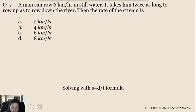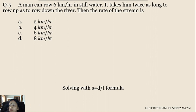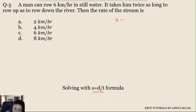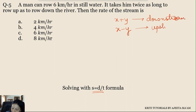The fifth question is again based on the first unit — numerical application. The first, second, and fifth questions are from this unit, while the third and fourth were from inferential statistics. This fifth question is based on boats and streams, solved using the formula: speed = distance/time, along with downstream speed = x+y and upstream speed = x-y.